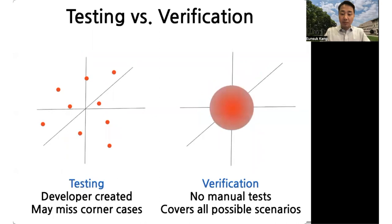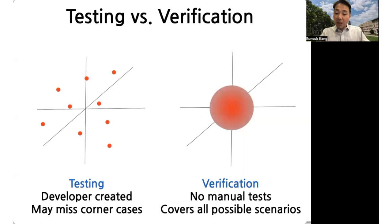One difference between testing and verification is the type of guarantee it provides. In testing, the developer manually creates test cases, and there is a chance some corner cases will be missed. In comparison, verification does not require manual test cases — instead, it uses a computer algorithm that automatically simulates and explores all possible scenarios in the system. This means verification can provide much stronger guarantees about safety than testing does.